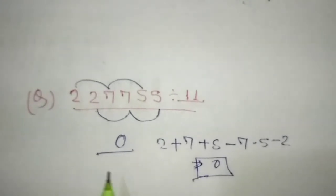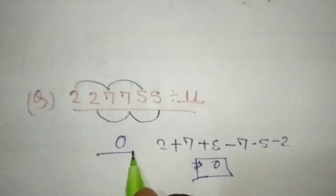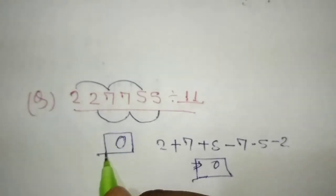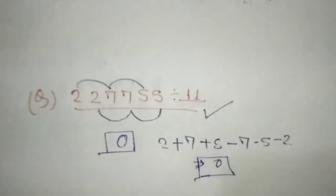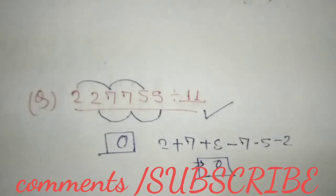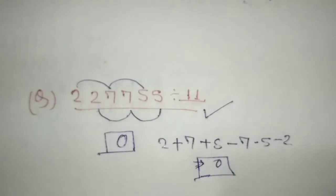So 0 is divisible by 11, so the original number is also divisible by 11. Thanks for watching. Please subscribe to my channel. I make videos on math.